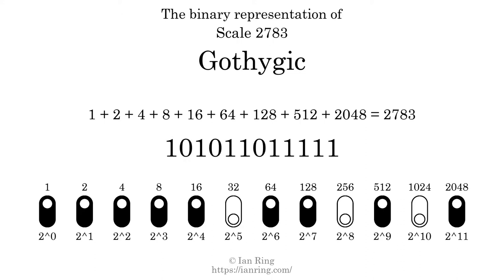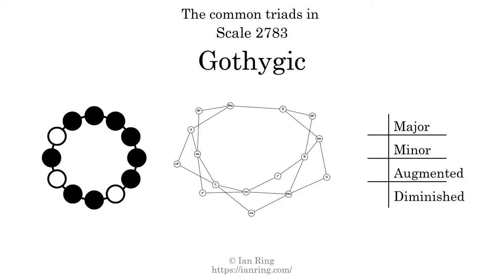Represented as a binary number in base 2, the scale number is 1, 0, 1, 0, 1, 1, 0, 1, 1, 1, 1, 1. Here are the common triads present in this scale.